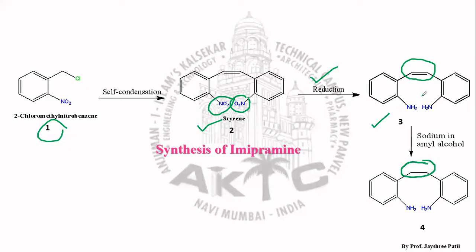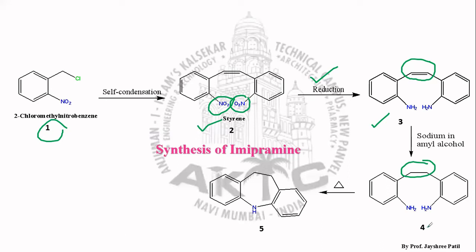Strong heating of structure 4 causes it to undergo cyclization. That cyclization leads to the tricyclic system, which is our target, because this is the main pharmacophore for all tricyclic antidepressants. When structure 4 undergoes strong heating, we get structure 5, which is nothing but our basic pharmacophore — the tricyclic system.